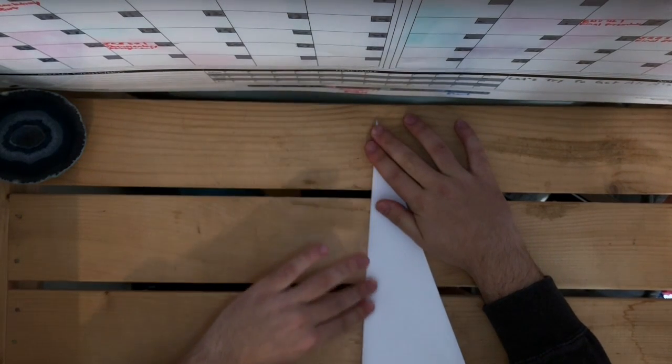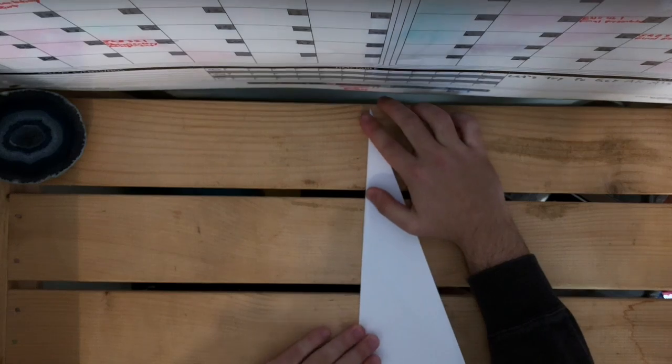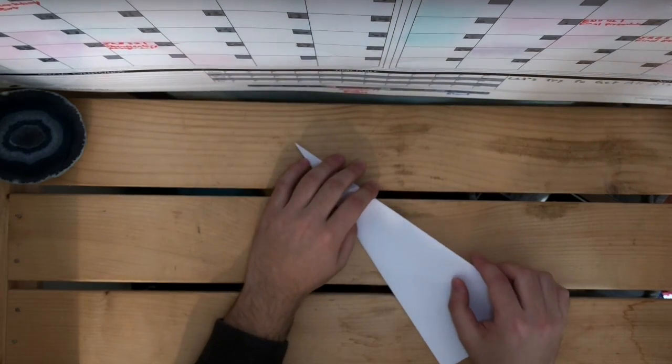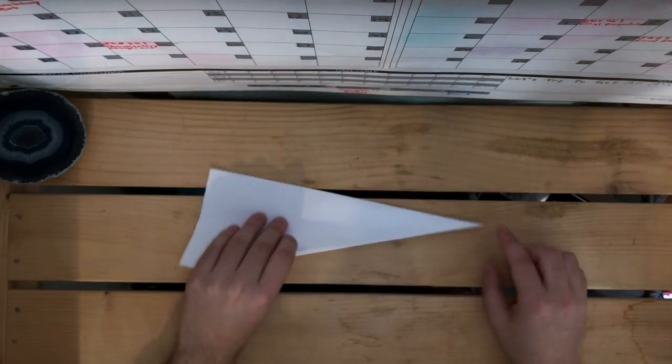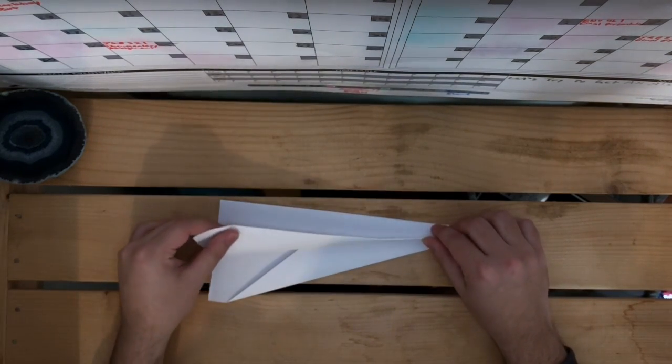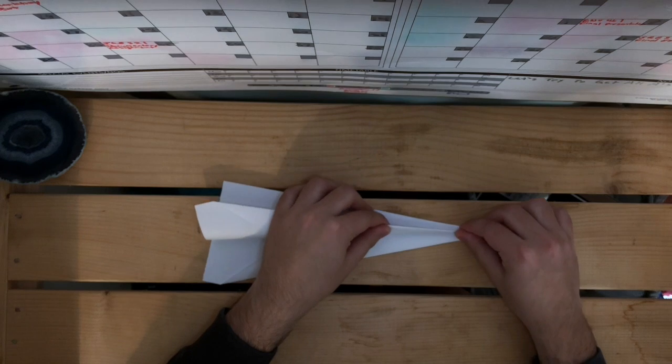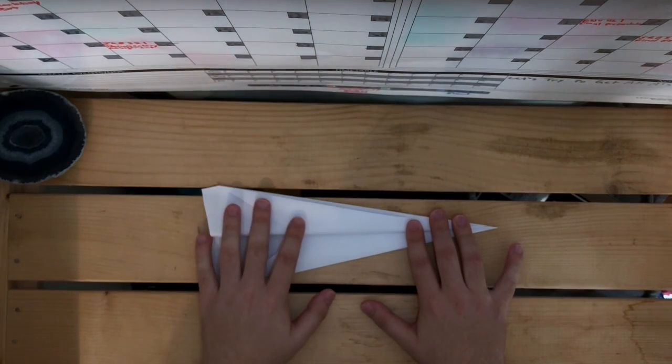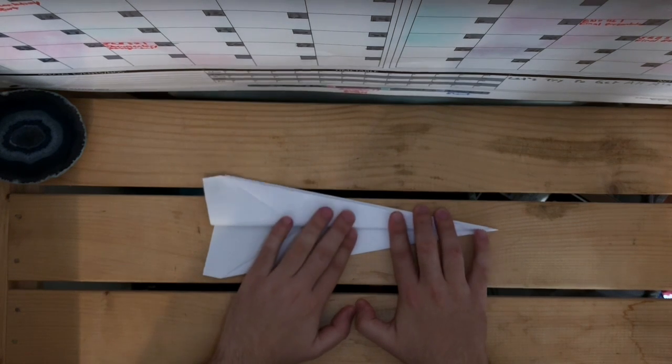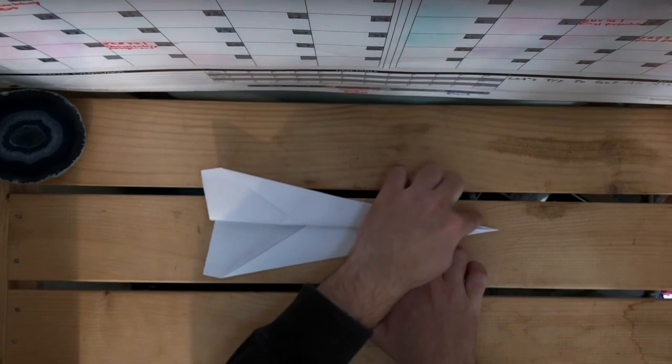Crease it down. What you're going to do is take this point here and fold it down like that to line up with the bottom crease here.